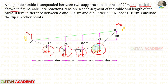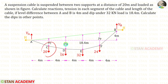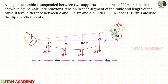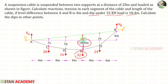There are four concentrated loads. The distance from all of the loads is 4 meter. Calculate reactions, tensions in each segment of the cable and the length of the cable. The level difference between A and B is 4 meter. The dip under the 32 kilo Newton load is 18.4 meter.